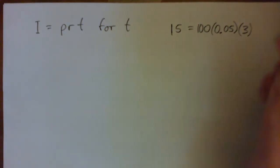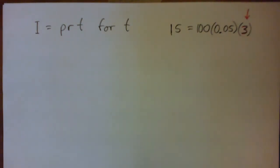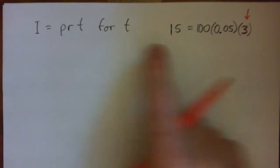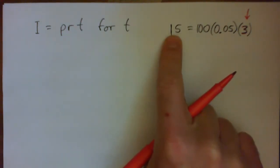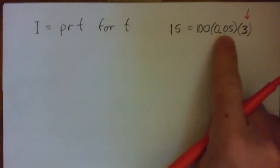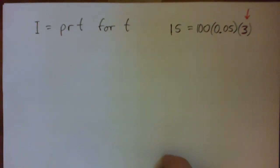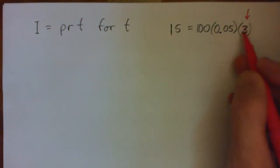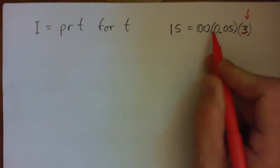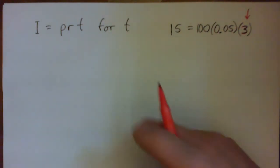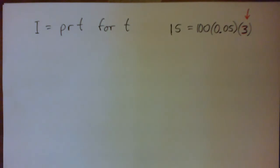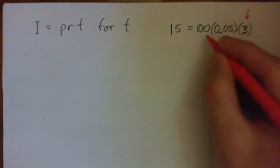Like, so the question is, our time is three years, and let's say we didn't know that. How would we find that? Given the interest of $15, the principle of $100, the rate of 5%, that's 0.05. So to get the three by itself is what we're trying to do. Now, three has been multiplied by this number and also multiplied by this number. So the opposite of multiplying is dividing. So we divide.